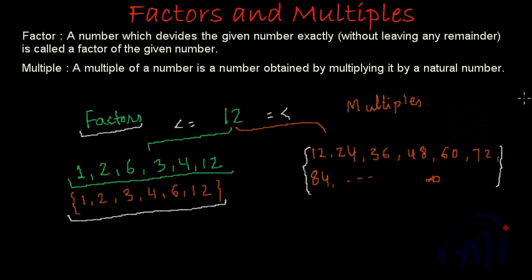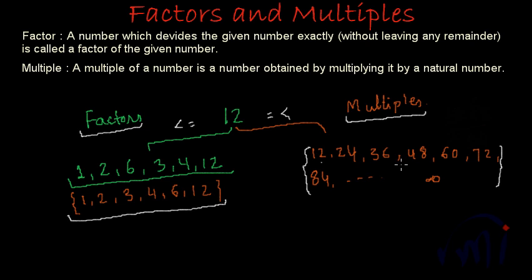So these are factors and multiples of a given number. In the next video we are going to learn methods of finding the factors. Finding multiples is very easy — you just multiply the number by a natural number. Multiplying 12 by 1 gives the first multiple, by 2 the second, by 3 the third, and so on. Finding factors is a little trickier, and we are going to learn those methods in the next few videos. Bye-bye till then.